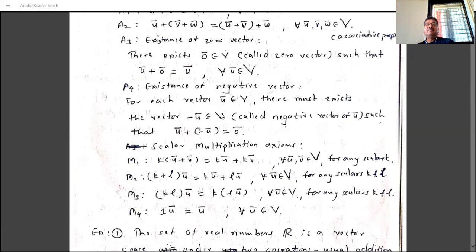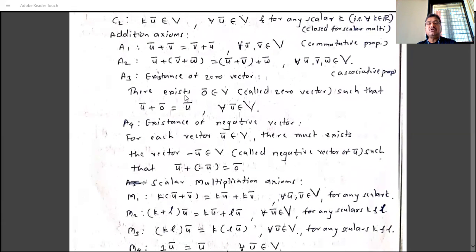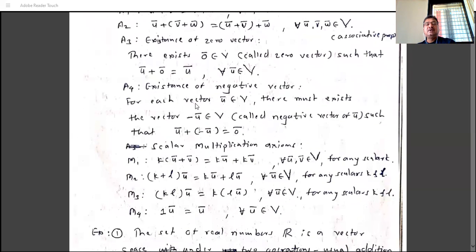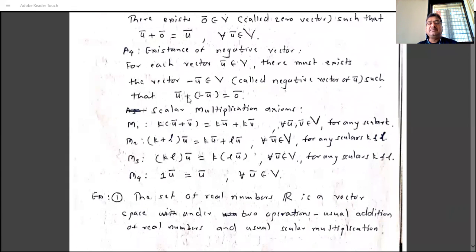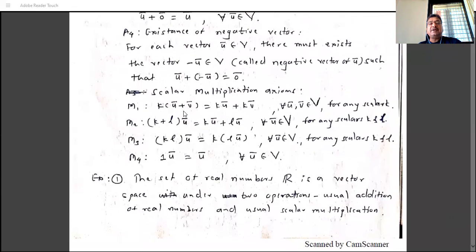For the set of natural numbers, zero does not exist, so A3 is also dissatisfied. A4 is also dissatisfied because the negative of 2 (which is −2) does not exist in the natural numbers. So if an element exists in V, its negative must also exist in V, and their sum must equal the zero vector.